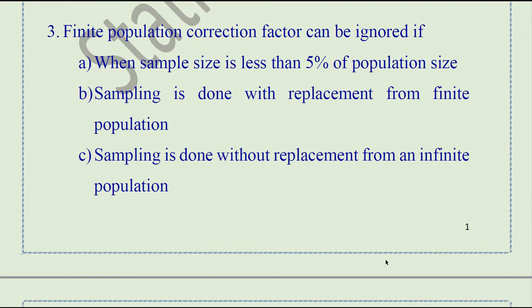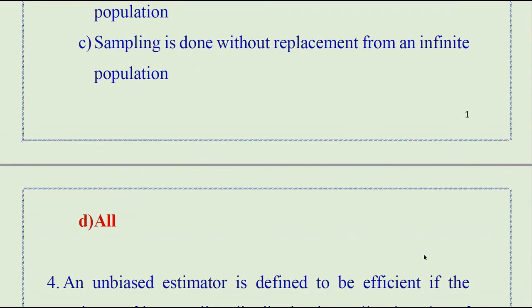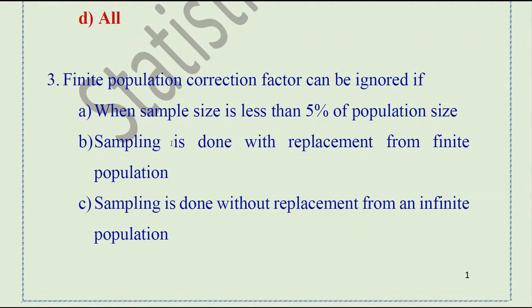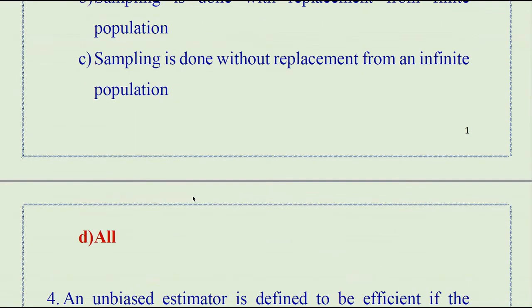Question number 3. The finite population correction factor can be ignored when: sample size is less than 5% of population size, or sampling is done with replacement from a finite population, or all of the above. The right answer is 'all above,' because in all these three conditions, we can ignore the finite population correction factor.